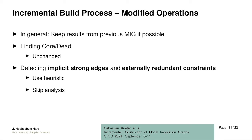For detecting implicit strong edges and finding externally redundant constraints, we can use heuristics or skip the analysis. The heuristic we chose is to look at the features contained in the added or removed constraints, and then only look at edges or constraints that contain these features. This might mean we miss some relevant constraints, but we skip many of the expensive steps and speed up the entire process. Alternatively, we can skip the analysis entirely, only verifying old results without looking for new anomalies.